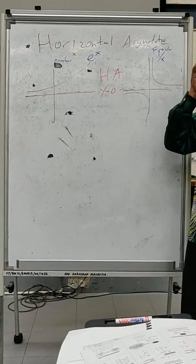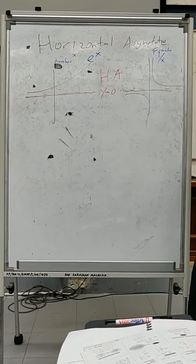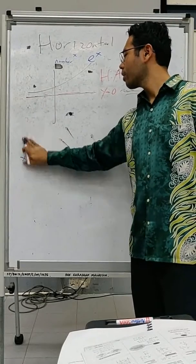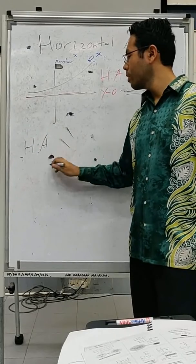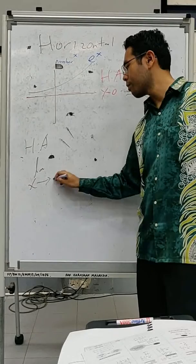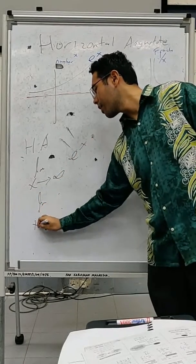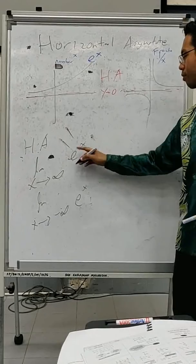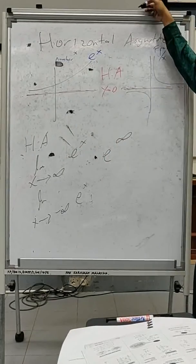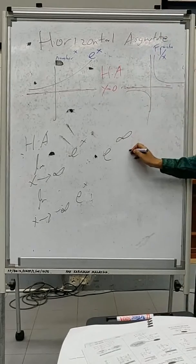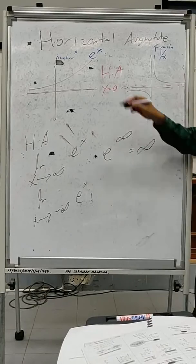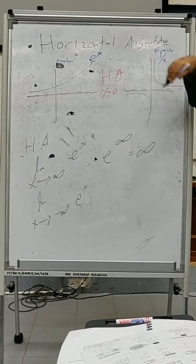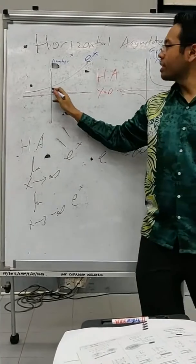For exponent, it's not that difficult. Let's have a look. For the horizontal asymptote with exponent, we need to test both sides: when X approaching infinity and when X approaching negative infinity. When X approaches infinity, e to the power of infinity gets higher and higher — it goes somewhere really really far, it reaches infinity.